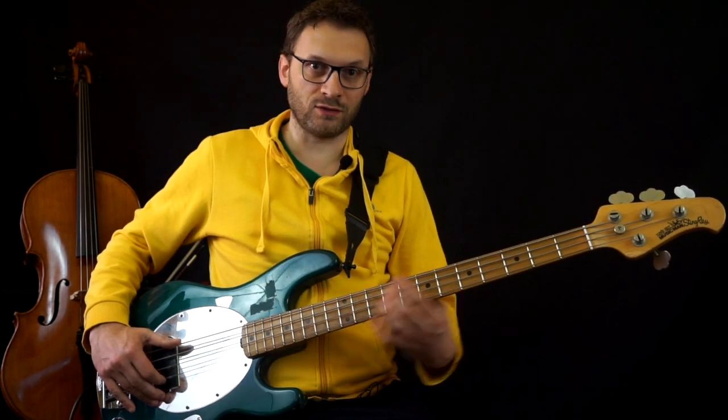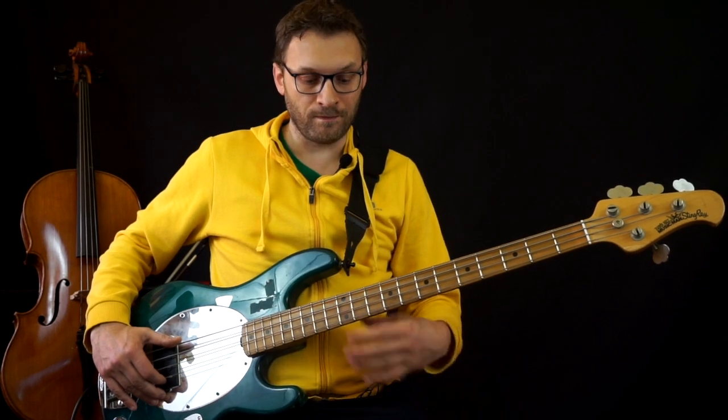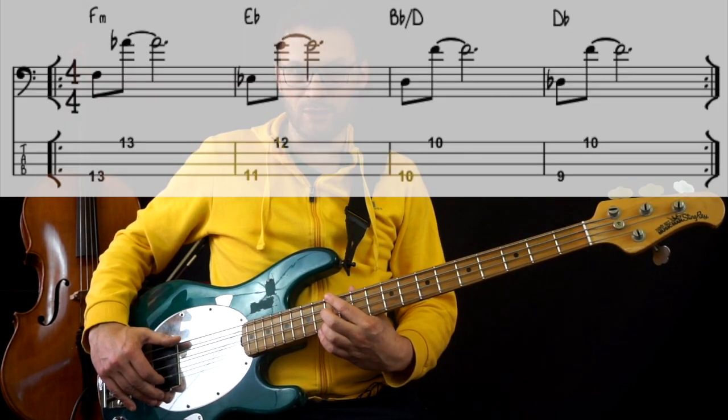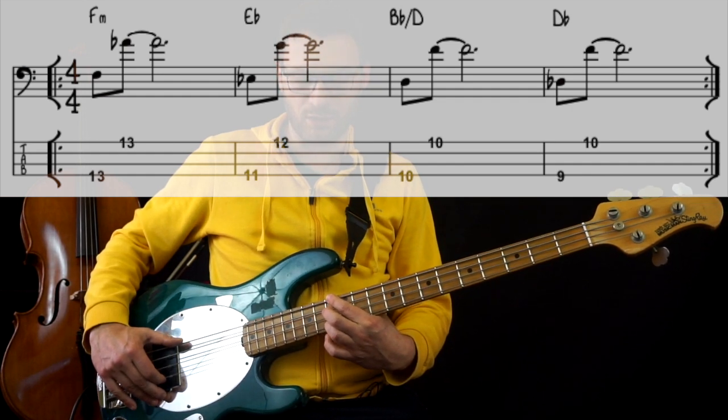This works across the whole fretboard, since the bass is a symmetrical instrument. So the first chord is F minor, fret 13 and 13 on the E and G strings.